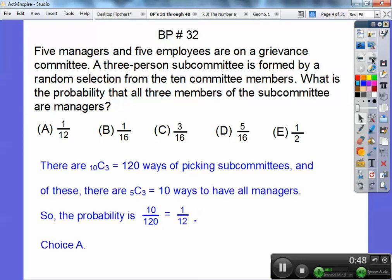So it's 10 C 3 which is 120 ways. And then out of the managers, if they're all managers, it's 5 C 3. So there's ten ways to be a manager and there's 120 ways total. So ten over 120 gives me choice A.